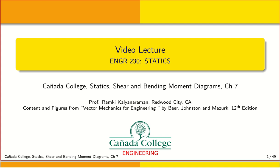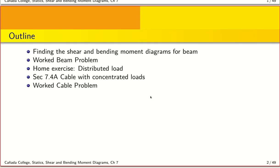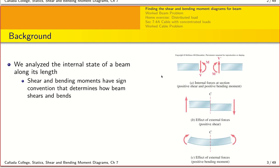Welcome to part 3 of our discussion of chapter 7, which deals with shear and bending moment diagrams at internal locations of members like beams. In our last class we talked about how to find the shear and bending moment diagram. Today I want to build on that and give you some steps to find these diagrams, work through an example problem, provide a practice problem with hints, and end with a discussion about a cable under concentrated loads.